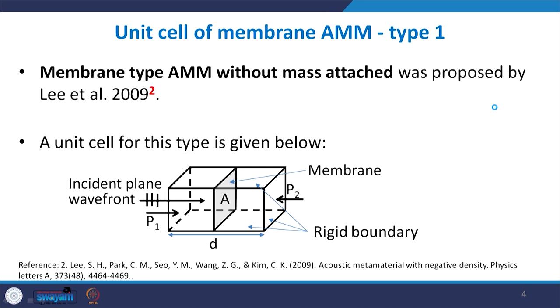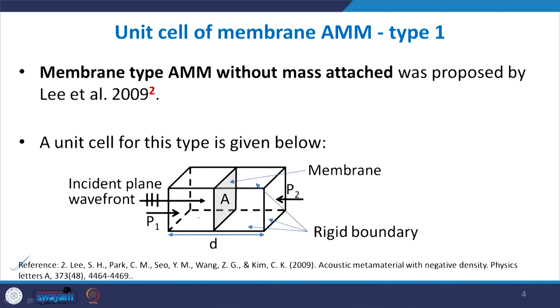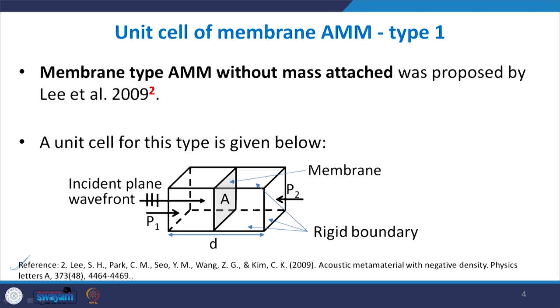Type 1 was proposed by Lee et al., 2009. The unit cell has a sub-wavelength waveguide, meaning all dimensions must be much smaller than the target wavelength lambda. Here you have a stretched membrane loaded with a fluid medium — in this case air, though any fluid such as water could be used. There is air inside the waveguide, a stretched membrane in between, and the average pressure on the left and right sides is P1 and P2, with a plane wave front incident on the stretched membrane.